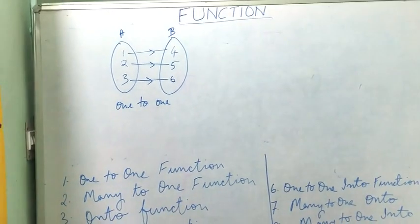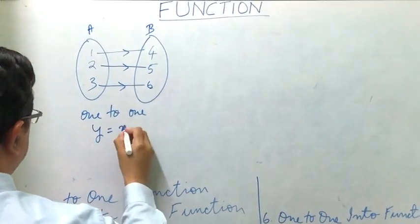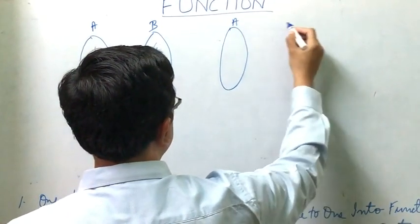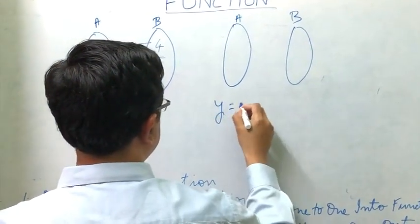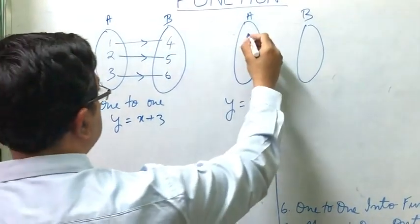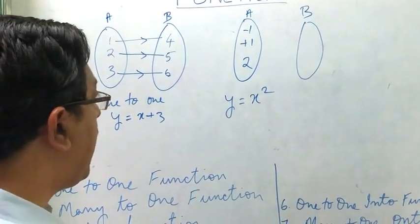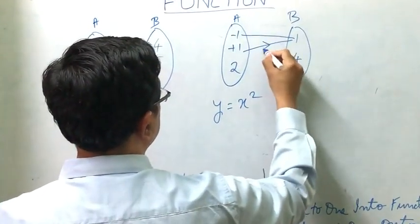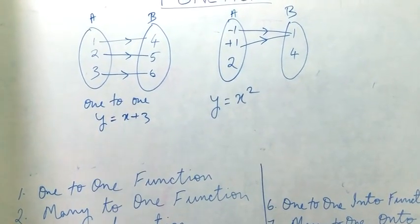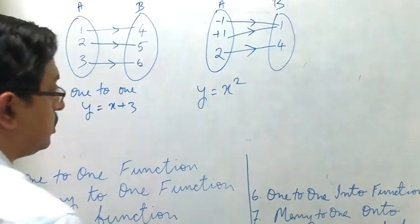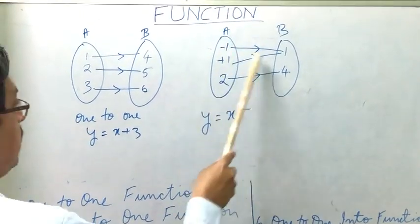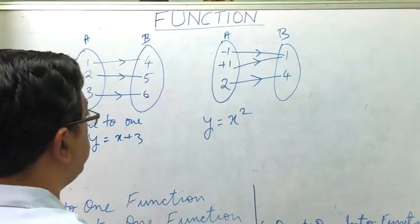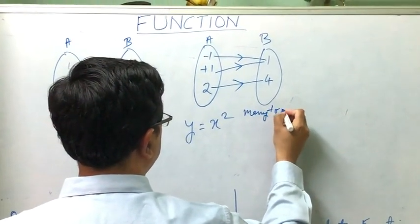The next type is a many-to-one function. For example, with y equals x squared, if set A has minus 1, plus 1, and 2, and set B has 1 and 4, then both minus 1 and plus 1 are associated with the single element 1 in set B. This is called a many-to-one function.